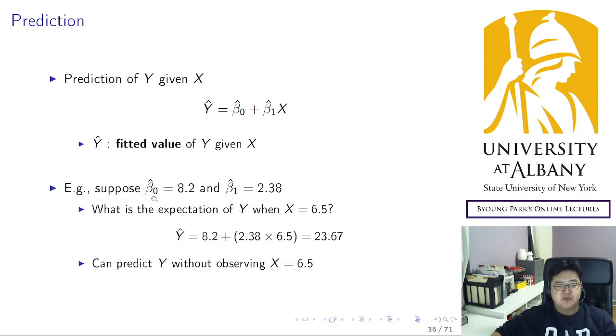In our example, like cost and output, suppose the fixed cost is 8.2 and the marginal cost is 2.38. Given this case, what is the expectation of y when x equals 6.5? You're planning to produce 6.5 units, then what would be the total cost? Simple. For each unit, your marginal cost is 2.38, so multiply that and plug in beta 0, beta 1, and x. The calculation is simple, and as a result, your predicted total cost is 23.67. This is the predicted value.